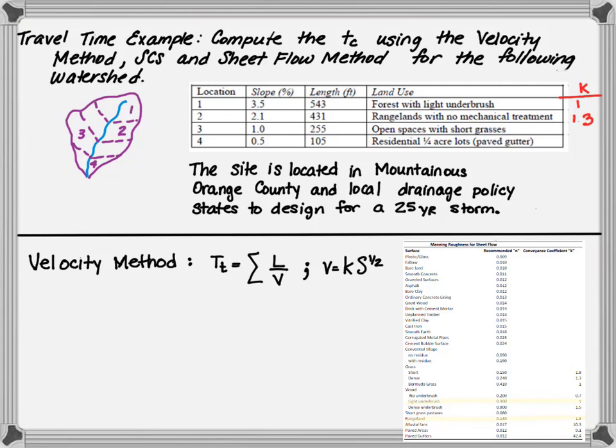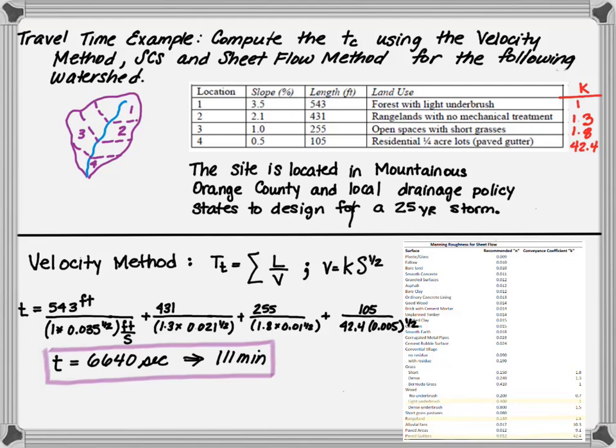There's one for rangelands, it has a K value of 1.3, open space 1.8, open space is short grasses, and then the paved gutters 42.4. Based on that, we can calculate the total travel time and we determine it by summing the length divided by the K slope to the 1 half for each of the land usages and we get 6,640 seconds, which is equivalent to 111 minutes. Realize that travel time is usually reported in minutes or hours, not in seconds.